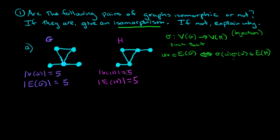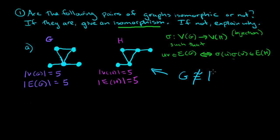Now I want to explain why we are not going to be able to find such a mapping. In fact, it turns out that these graphs are not isomorphic. G and H are not isomorphic — that's the symbol for isomorphic, and it turns out they are not.